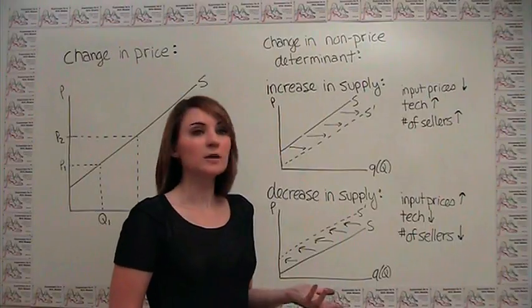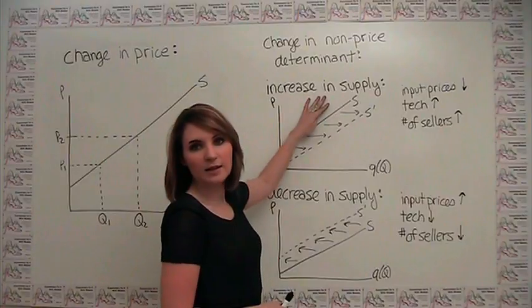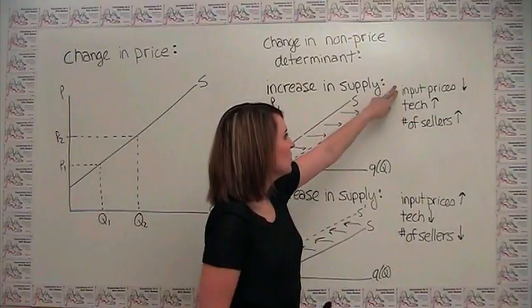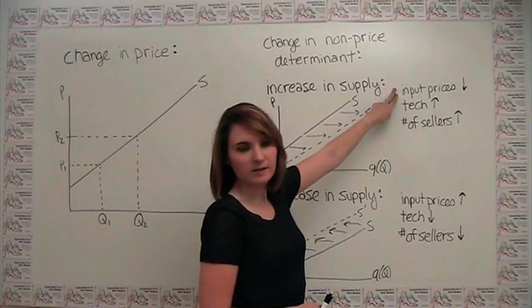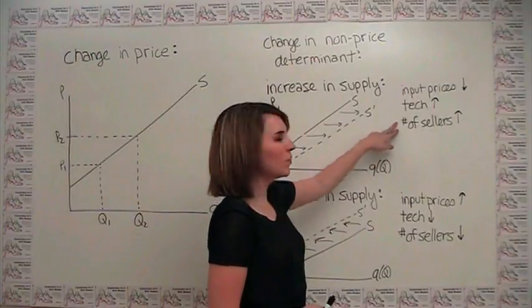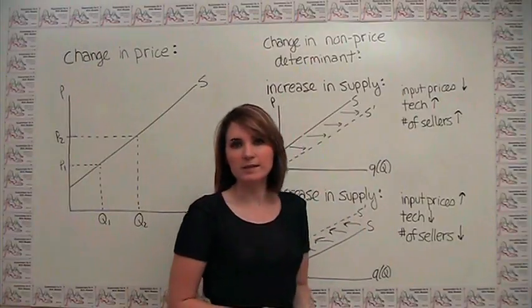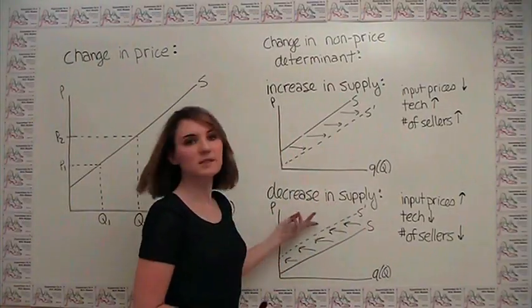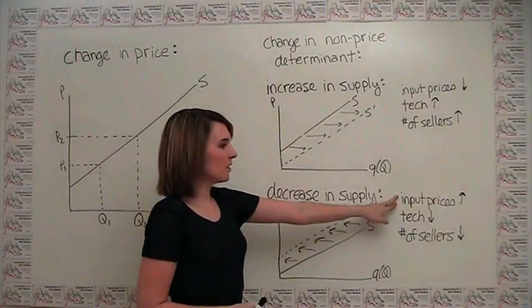Let's summarize what we said earlier. You can see here that we get an increase in supply when we have a decrease in our input prices, when we have an increase in technology, or when the number of sellers in our market increases,